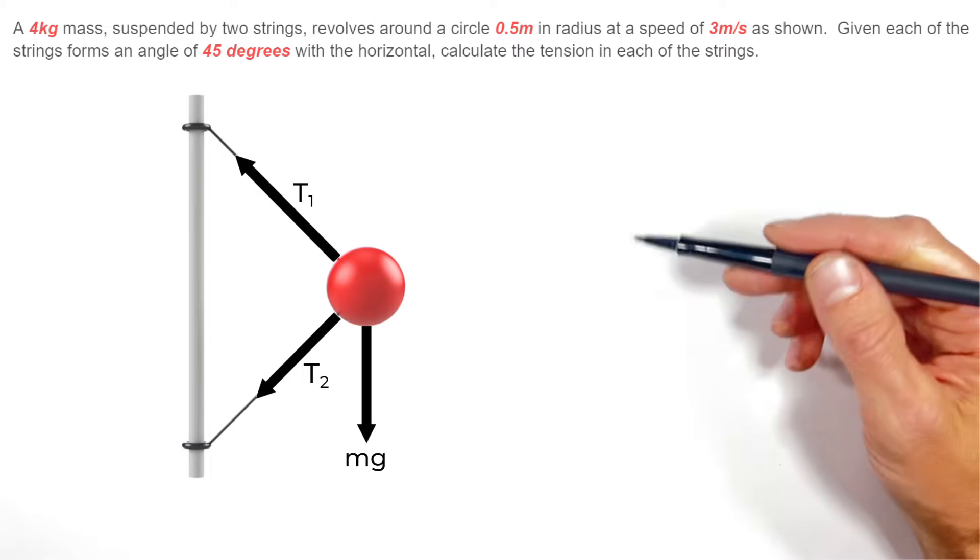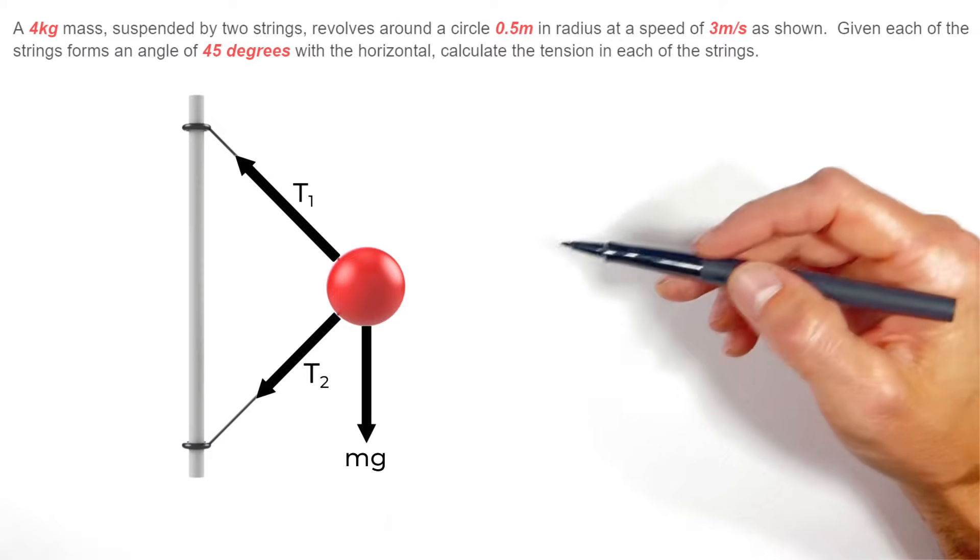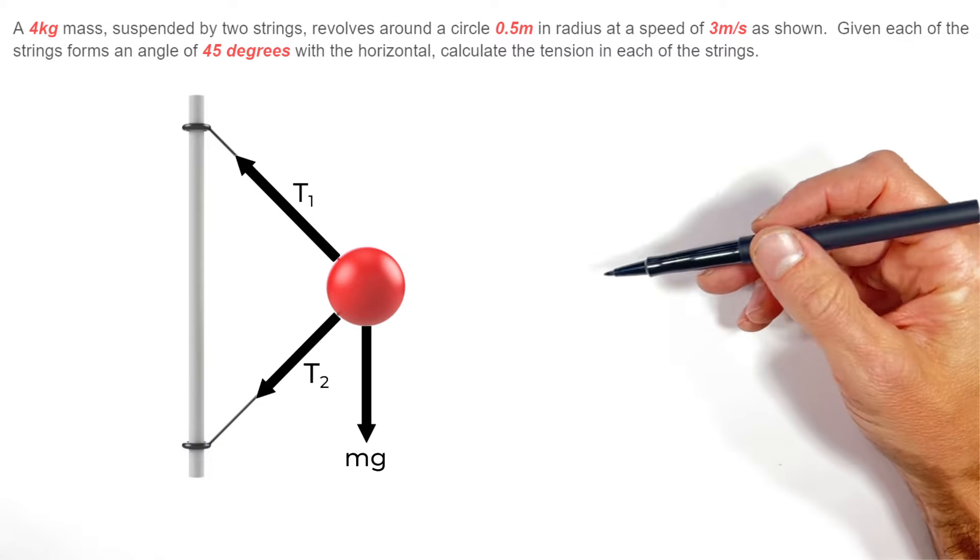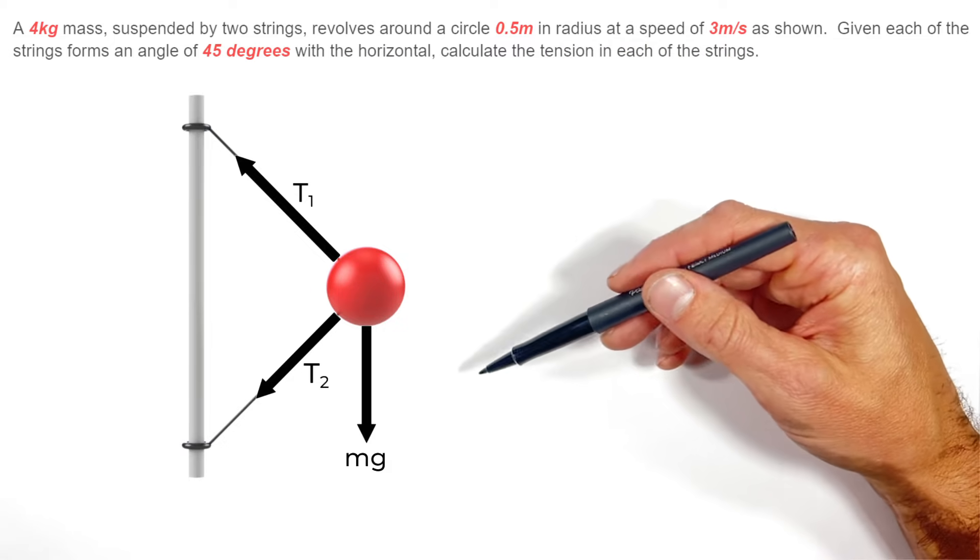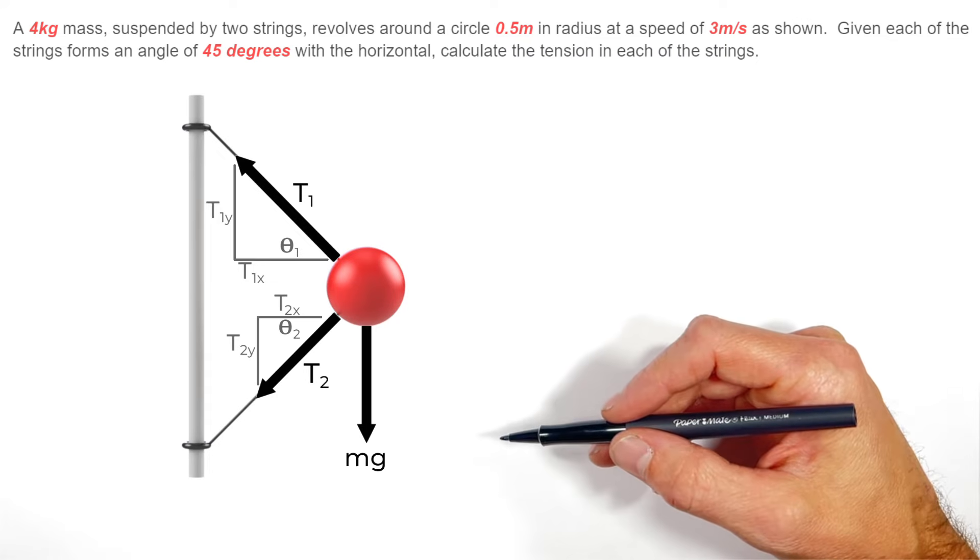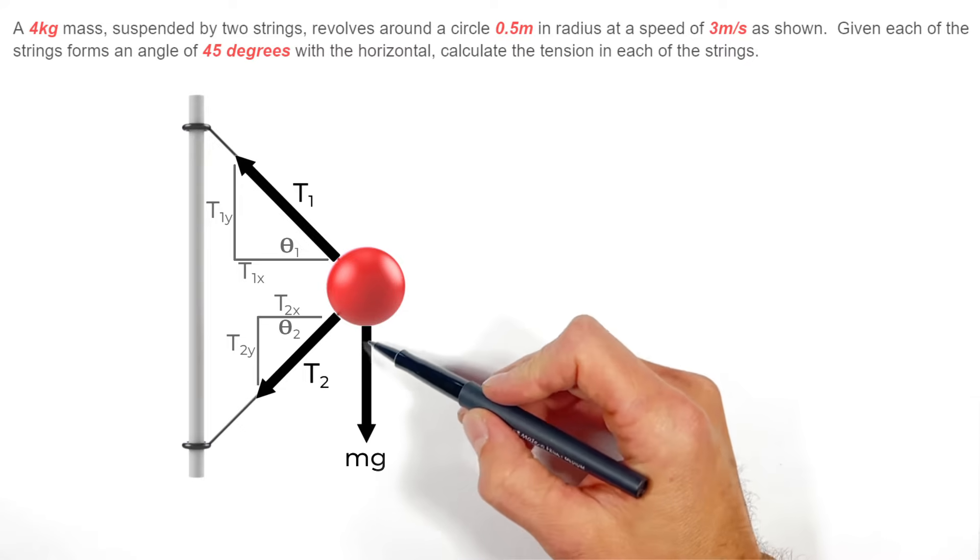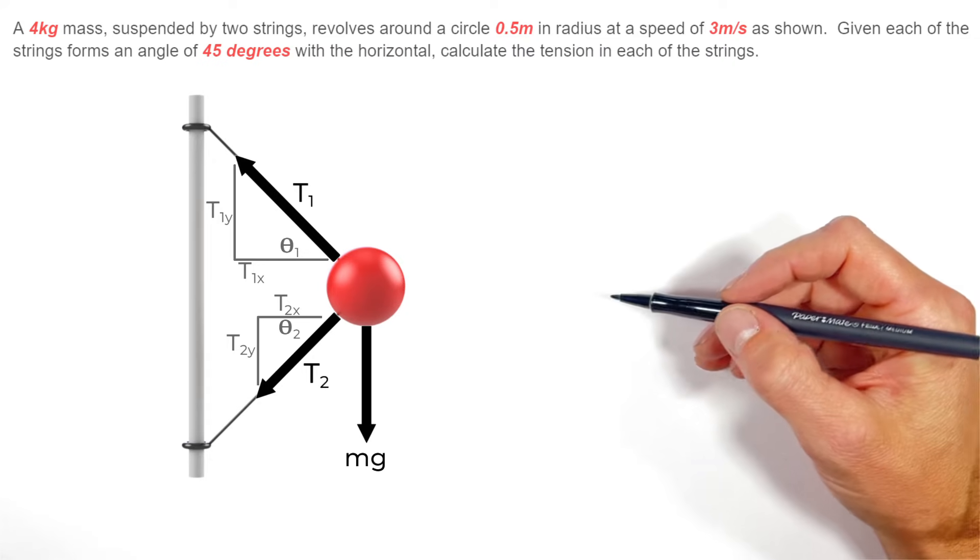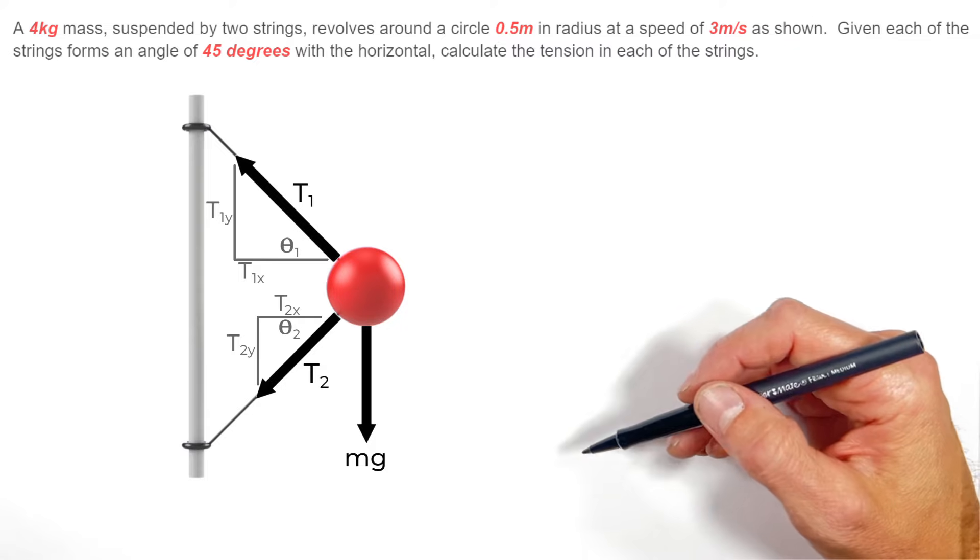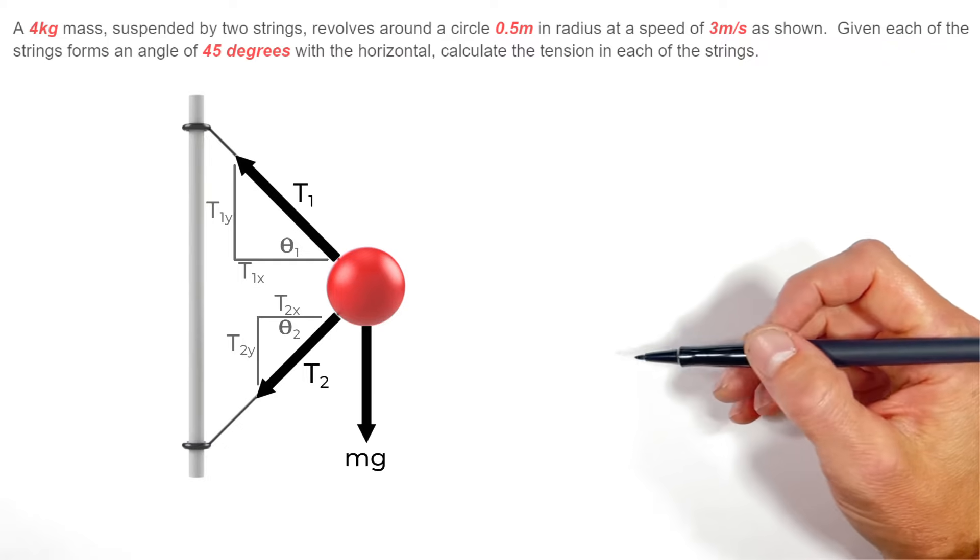Now the most important thing to recognize in this entire problem is that these two tensions in the strings are acting in both the vertical and horizontal axes. So what we're going to do is break those two force vectors up into their vertical and horizontal components. We'll call them T1y and T1x, and T2y and T2x. At first it looks like we're creating more unknowns, but as we work through this we'll find this all boils down and allows us to solve for T1 and T2.